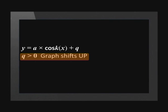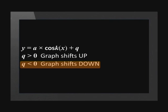In other functions, the value of q shifts the graph up or down — it is the same with trig functions. If q is positive, the graph will shift up. And if q is negative, then the graph will shift down.